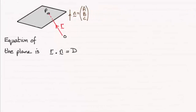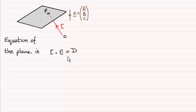Hi there. Now you should already be familiar with the scalar product or dot product form for the equation of a plane. R dot n equals a constant d, where r is the position vector of any point on the plane and n is a vector which is normal to the plane with components a, b, and c.